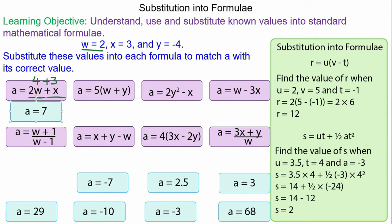5 times (w plus y): 5 times (2 plus negative 4), which is going to be 5 times negative 2, and that comes out as negative 10.